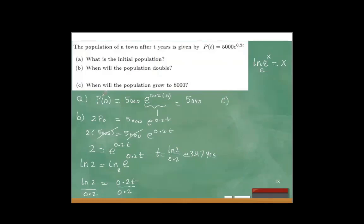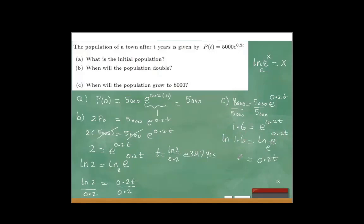For Part C, when will the population grow to 8,000? We write 8,000 = 5,000 × e^(0.2T). Dividing both sides by 5,000 gives 1.6 = e^(0.2T). Taking the natural log of both sides and using the same property gives 0.2T = ln(1.6). Dividing by 0.2 gives T = ln(1.6)/0.2, which is approximately 2.35 years.